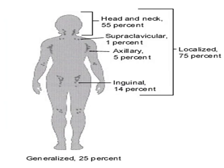This diagram shows that generalized lymphadenopathy accounts for about 5%, while localized is 75%, with 55% of them in the head and neck, 14% in the inguinal, 5% in the axillary, and only 1% in the supraclavicular lymph node.